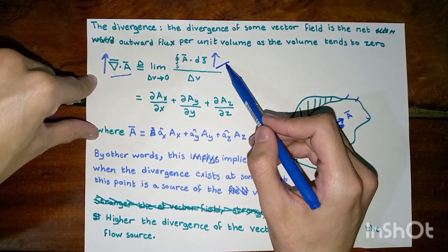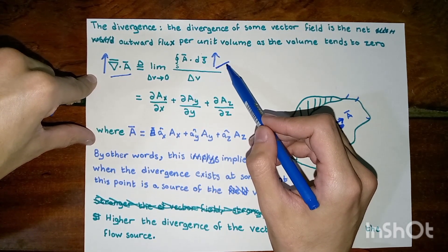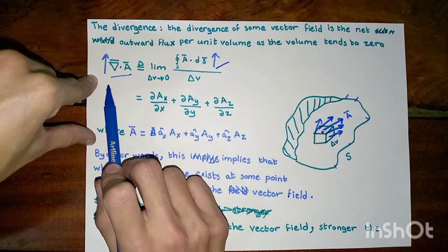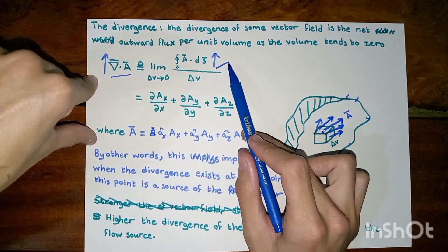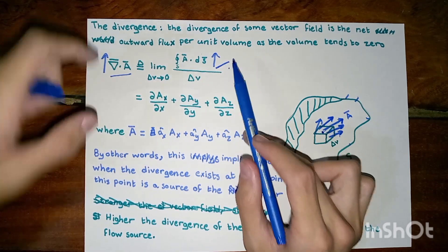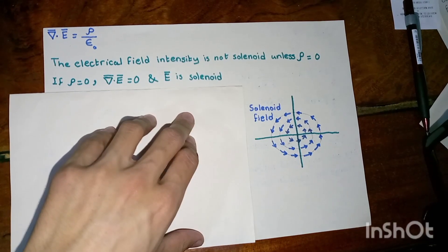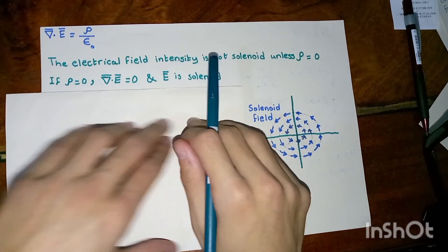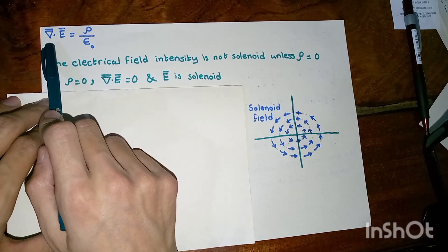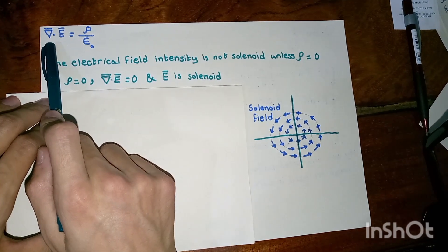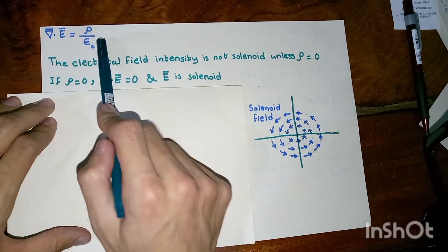The surface integral represents the outward flow, the outward flux. This means the higher the divergence of the vector field, the stronger the flow we have. And this is the point of the divergence. After understanding what divergence means, by looking at this equation we understand that the source of the electrical field intensity is the charge density.